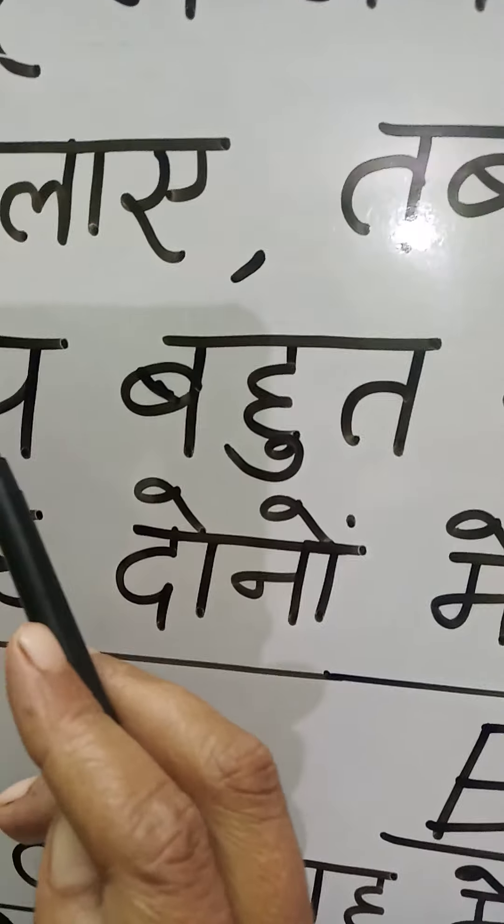फिर Exercise One देखिए — Exercise One डालेंगे। खाली जगह में सही शब्द भरो। Okay बच्चों, number one: दोनों ___ में झगड़ा हो गया। आप क्या भरेंगे? Blank में — मित्रों।